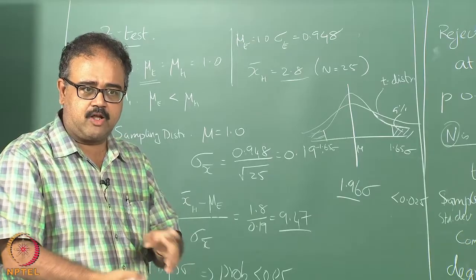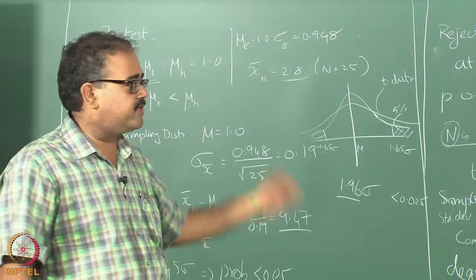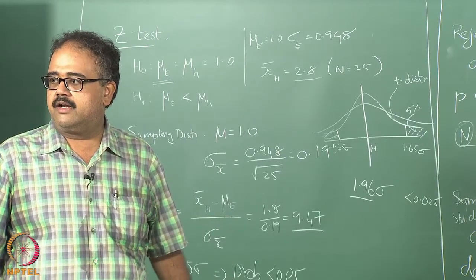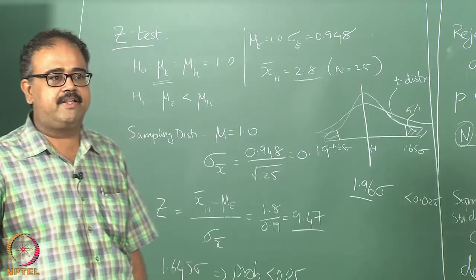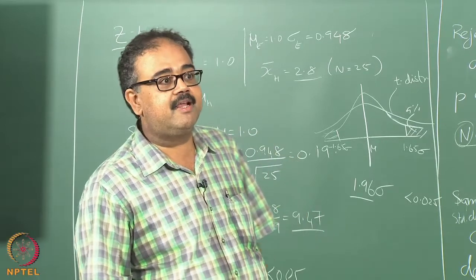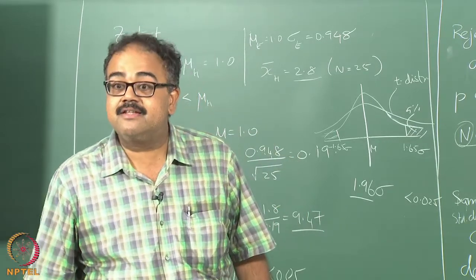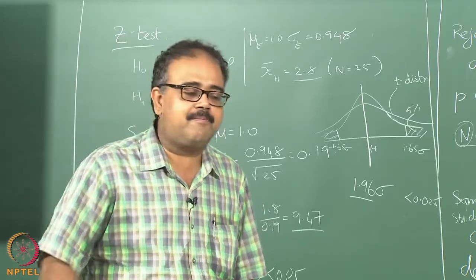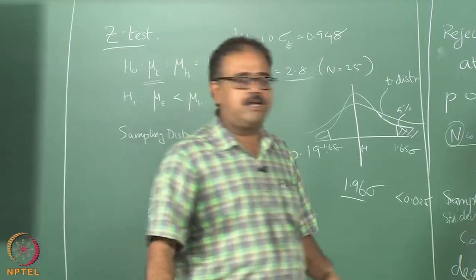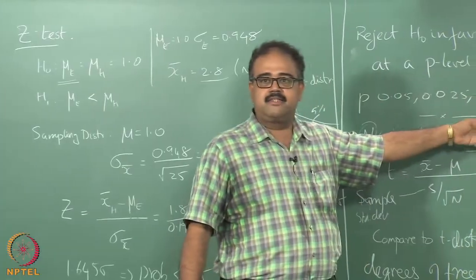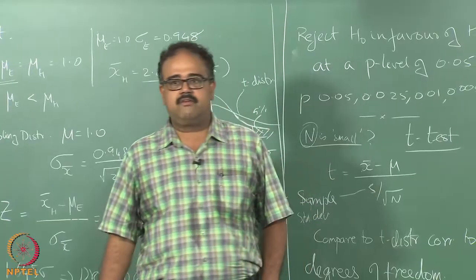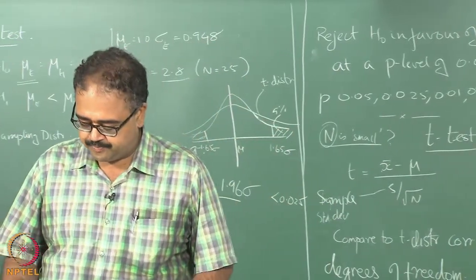Almost all packages that you can use have all of these built in — you can do t-test, z-test, whatever you want. You do not really have to worry about the internals. For a given test you just need to specify the p-level you are looking for. If you say I want a p-level of 0.001, some of these could come back saying they cannot reject the null hypothesis at that level, and it will tell you what the result is.